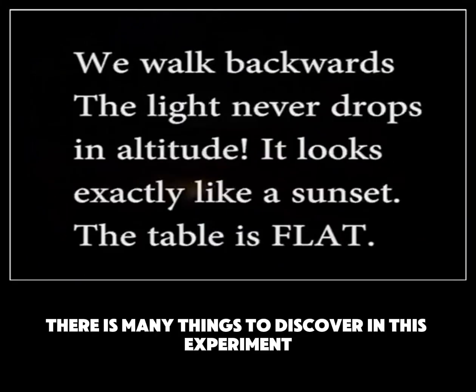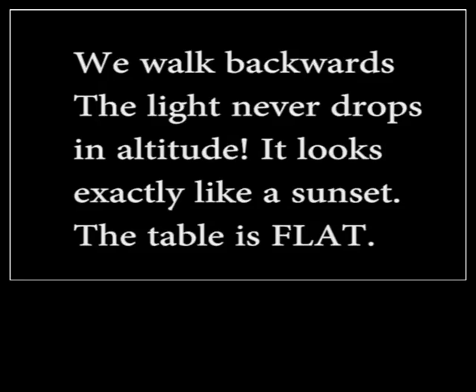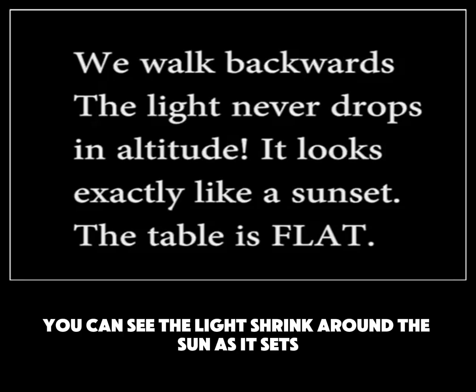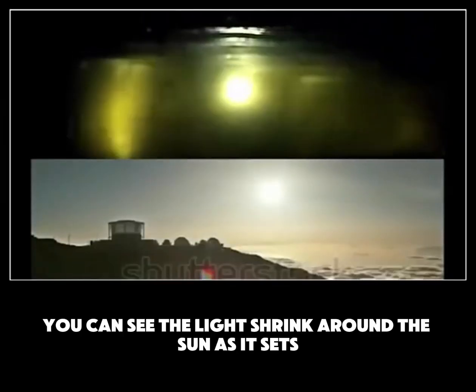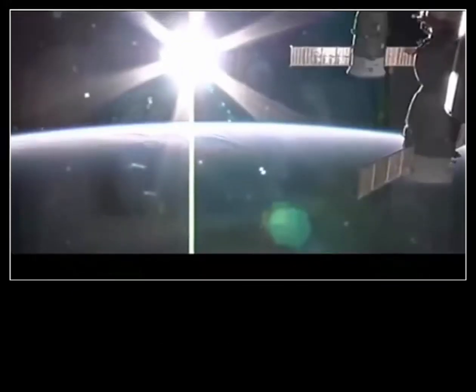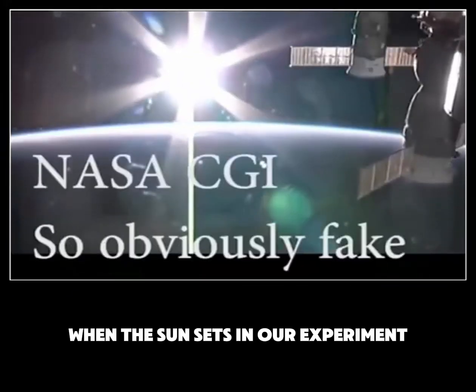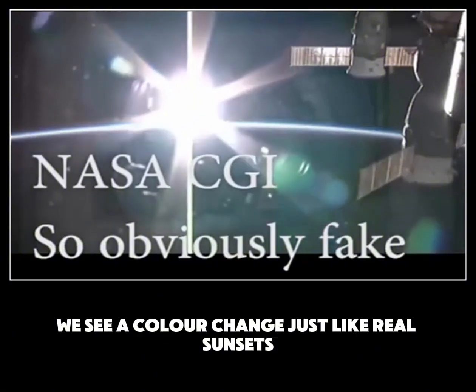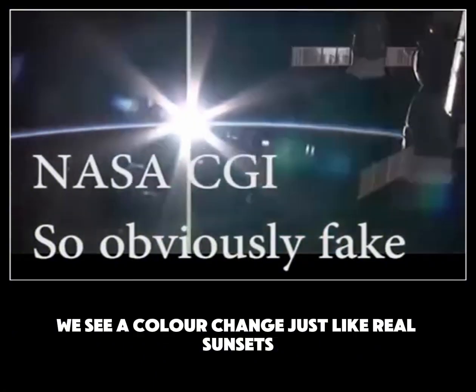Let's watch the experiment in action. As you can see, the sun gets cut off from the bottom first. But that's not all — there are many things to discover in this experiment. You can see the light shrink around the sun as it sets, which is exactly what we see in real life. When the sun sets in our experiment, we see a color change, just like real sunsets.